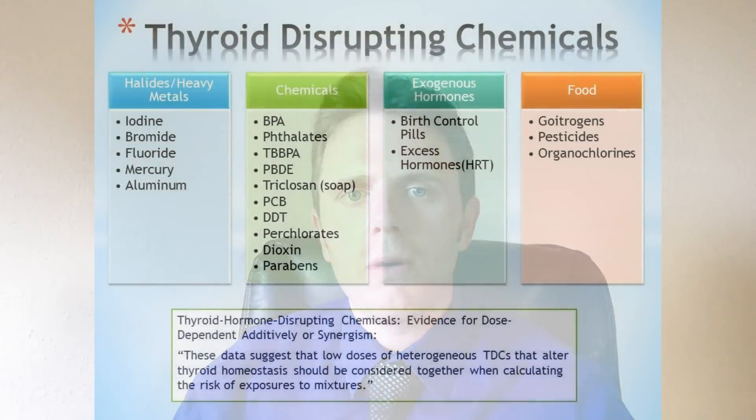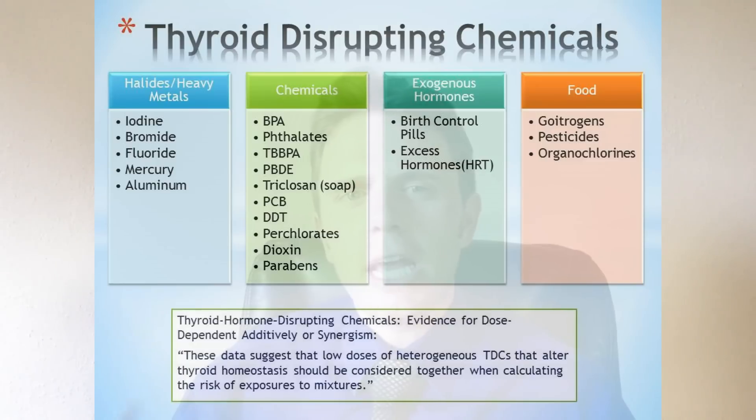Next are compounds known as PBDEs. These are common flame retardants, essentially used in mattresses or different rugs to prevent fire. But they also have a detrimental effect on our thyroid hormone function. There are a lot of different compounds that are these flame retardant based things.